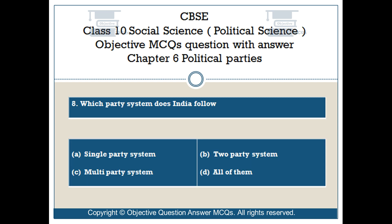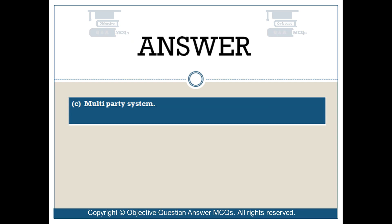Question number 8. Which party system does India follow? Option A: single party system. Option B: two party system. Option C: multi party system. Option D: all of them. The right answer is Option C: multi party system.